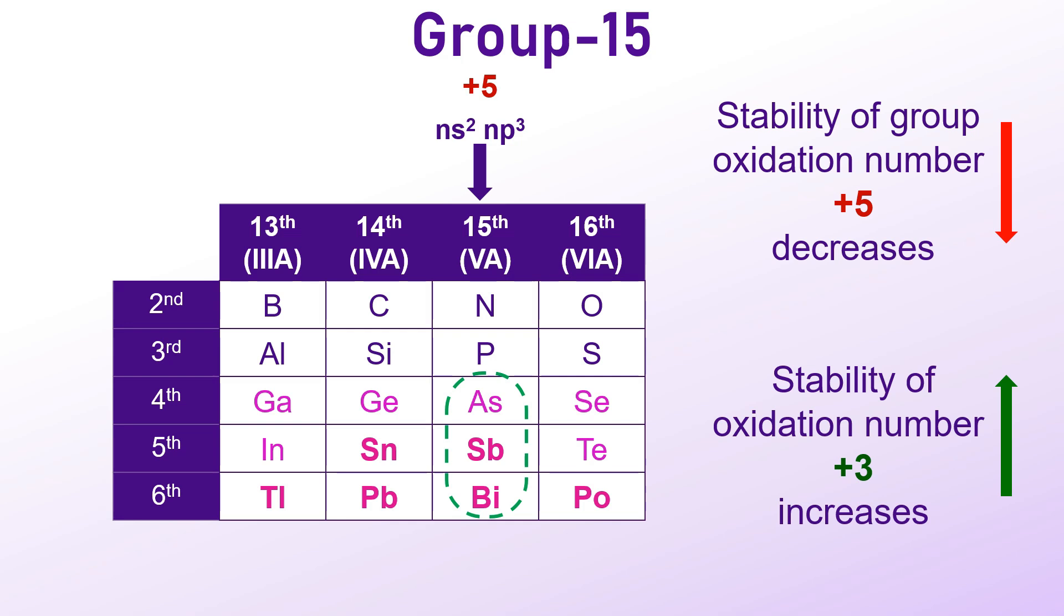Bismuth, for example, is far more stable in the +3 oxidation state, with the +5 oxidation state being relatively rare due to the increasing inert pair effect.